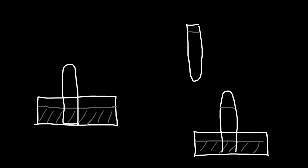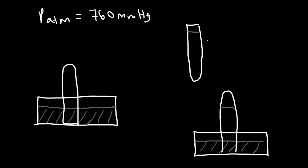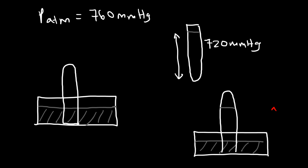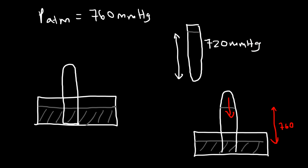In the mercury-filled scenario, the mercury may either go up or down based on its height. If the atmospheric pressure is currently 760 millimeters of mercury and you place 720 millimeters of mercury inside, this will go up from 720 to 760. If you place more — say 800 millimeters of mercury — this will go down from 800 to 760.